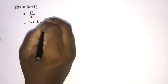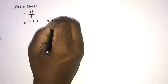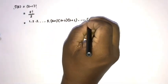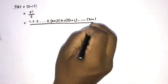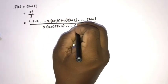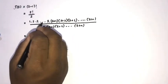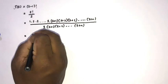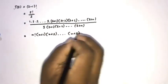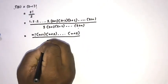We know s! equals 1·2·3···s. Now I am going to multiply both numerator and denominator by (s+1)(s+2)(s+3)···(s+n). So the denominator also gets multiplied by (s+1)(s+2)···(s+n).